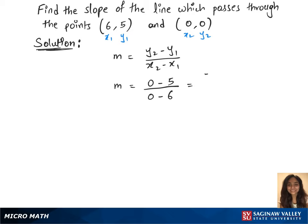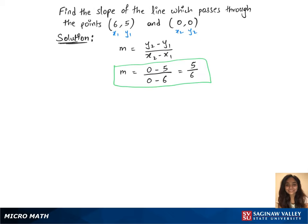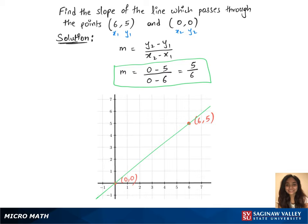Now we'll get 5 over 6 and that's the slope of the line which passes through the points given. And the graph looks like that, a line that passes through the points (6,5) and (0,0).